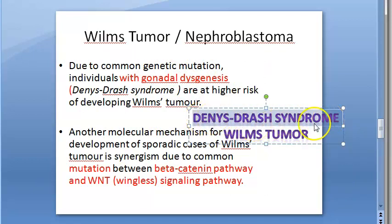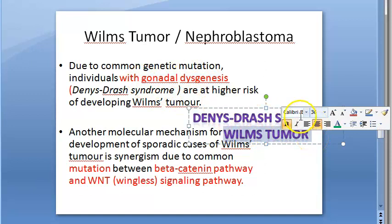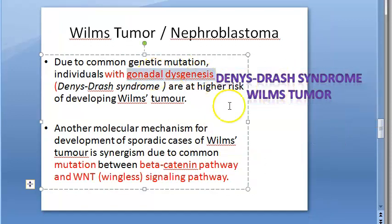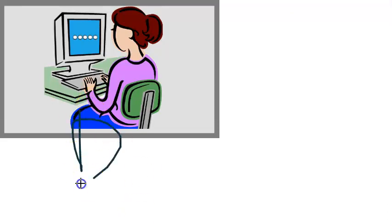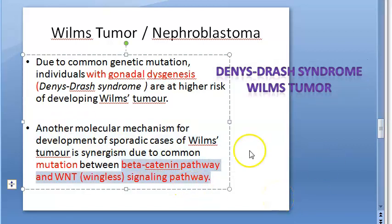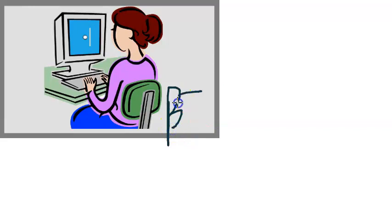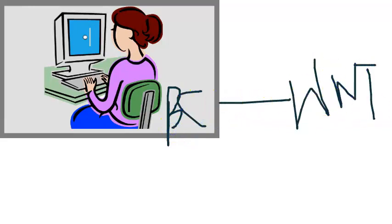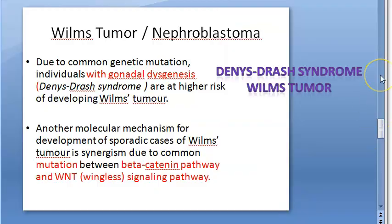There can also be Denys-Drash syndrome, in which people have gonadal dysgenesis and are at high risk for Wilms tumor, because the same WT1 pathway is affected. Additionally, mutation in the beta-catenin pathway and the WNT wingless signaling pathway can lead to sporadic cases of Wilms tumor. This completes the etiopathogenesis of Wilms tumor.